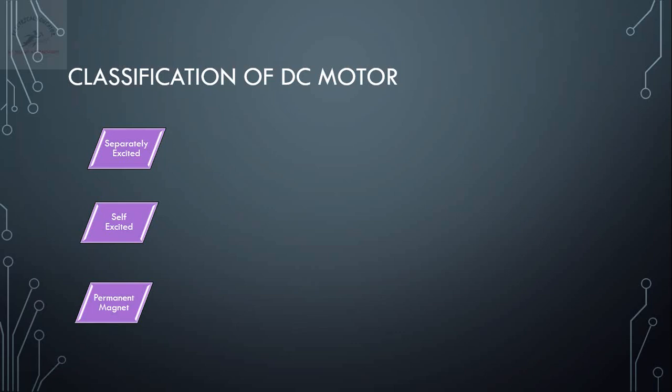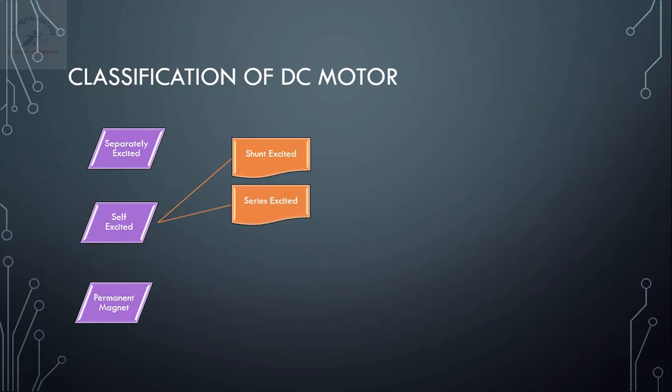In self-excited motors we further have different categories. First is shunt excited — if the field winding is connected parallel to the armature winding, we call it a shunt excited motor. If the field winding is in series with the armature winding, we call it a series wound or series excited motor. If both series and shunt fields are present, we call it a compound motor.